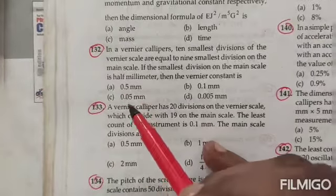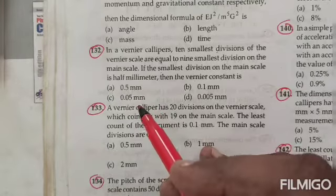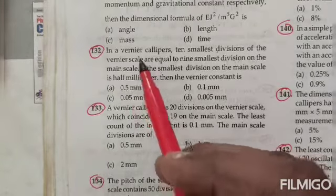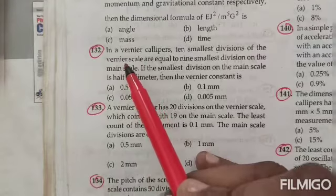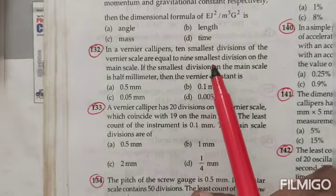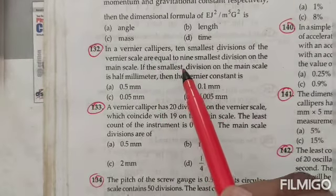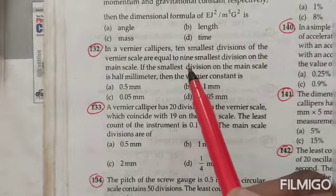Dear students, in this video we are going to discuss vernier caliper problems. See the question now: In a vernier caliper, 10 smallest divisions of the vernier scale are equal to 9 smallest divisions on the main scale.